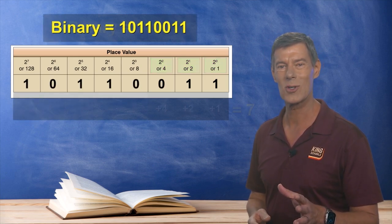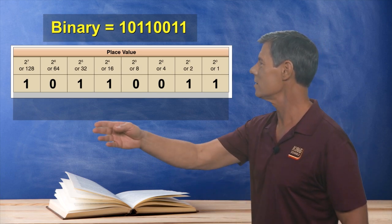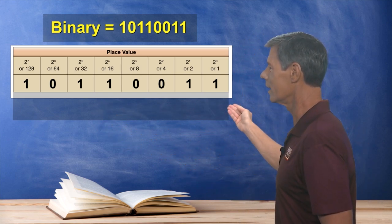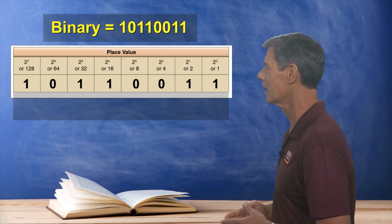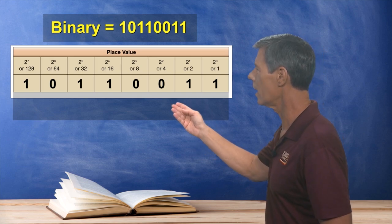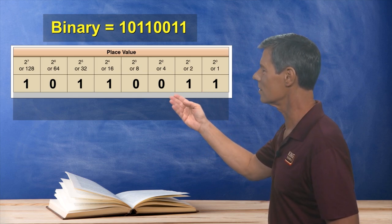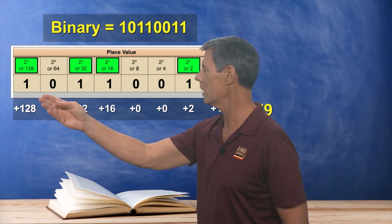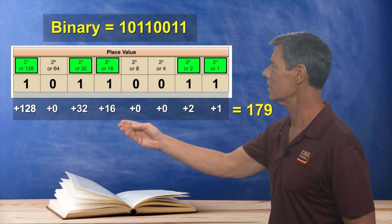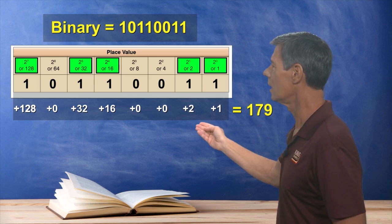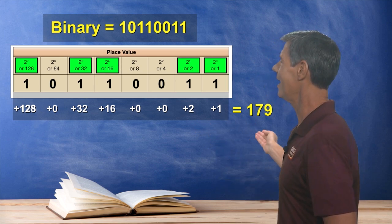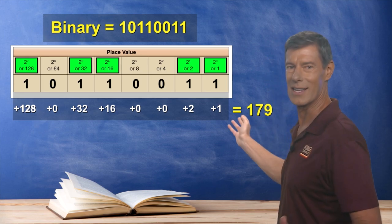So let's try converting the binary string 10110011 into a decimal using this figure. Now remember, we only add a value where there's a one and we do nothing with the zeros. So we have a one in the 128 column, the 32 column, the 16 column, the 2 column, and the 1 column. Add all those values up and we get a value of 179.